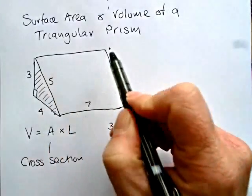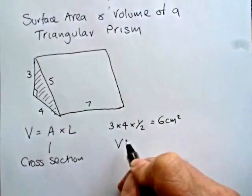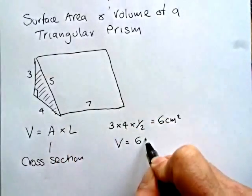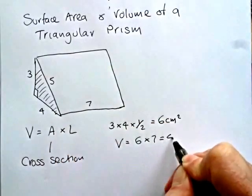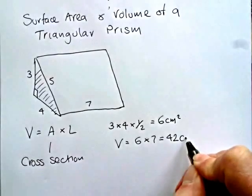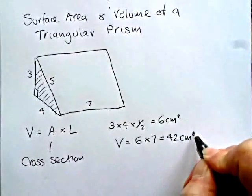Now the length of consistency is 7, that's clearly written there. So it's 6 times 7, and so the volume really is quite straightforward. And it's 42 centimeters cubed.